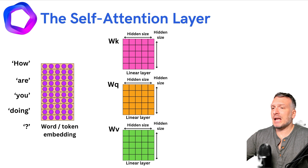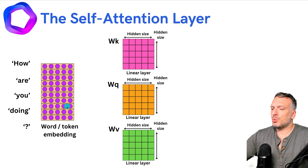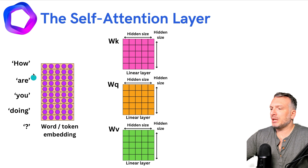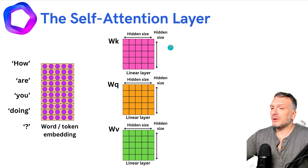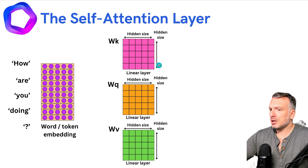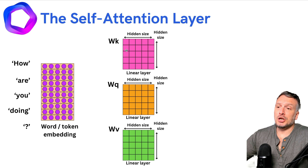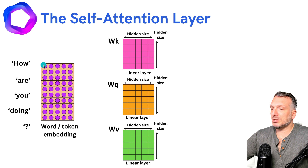Let's dive into what is actually happening in a self-attention layer. Here we have the word or token embedding that is going to help generate a vector representation of the different tokens that will be inputted into the model. As part of the self-attention layer, we have three different linear layers. They can have different sizes, but the important thing is that the number of input features is the same as the number of elements in the vectors in the token embedding.